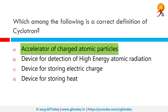A cyclotron is a type of particle accelerator invented by Ernest Lawrence in 1929-30 at the University of California, Berkeley, and patented in 1932. It accelerates charged particles outwards from the center along a spiral path.